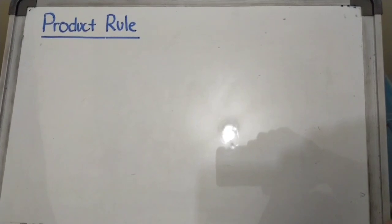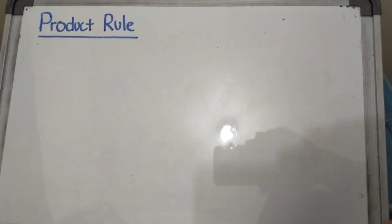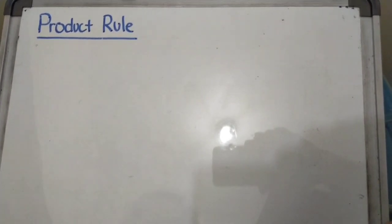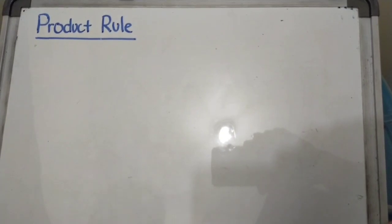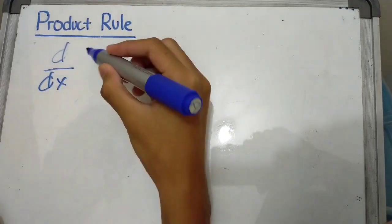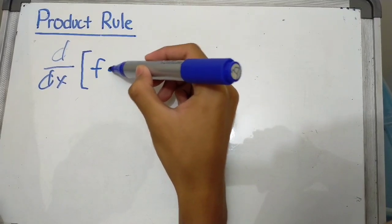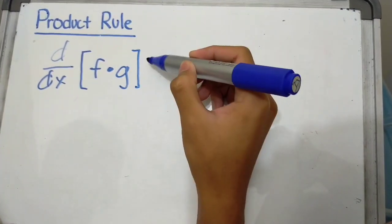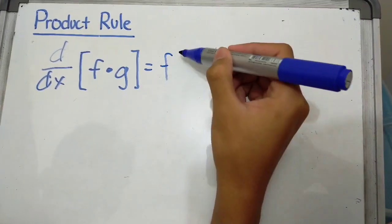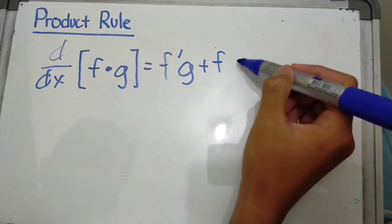Let us now move on to the derivative rules which are much easier compared to the limit definition. First off is product rule. In calculus, the product rule is a formula used to find the derivatives of products of two or more functions. If we have a function f multiplied by another function g, the derivative will be f' g + f g'.